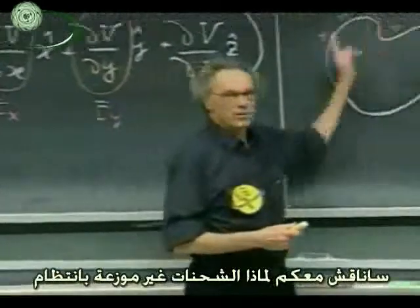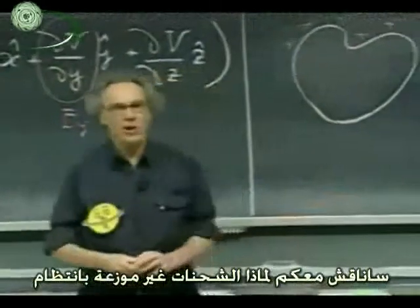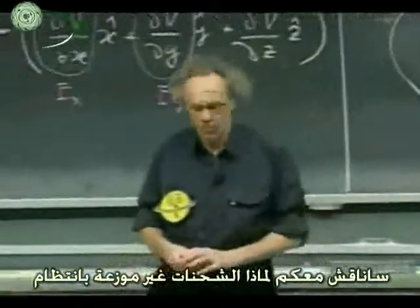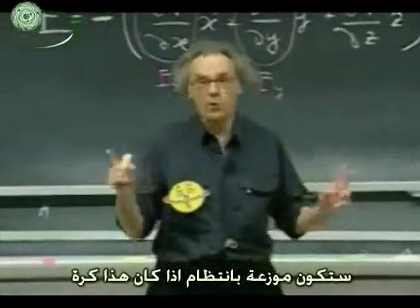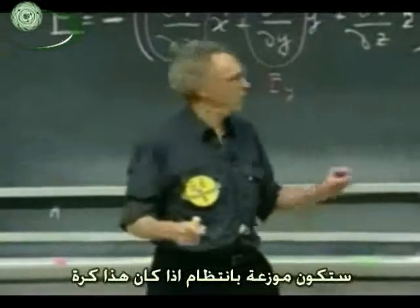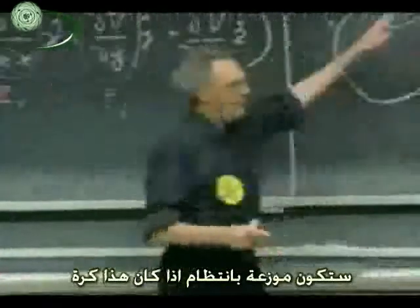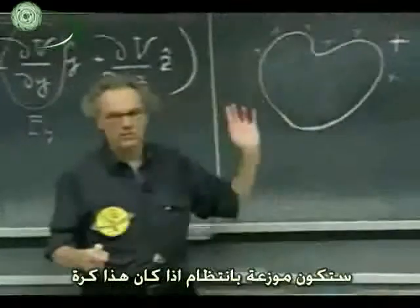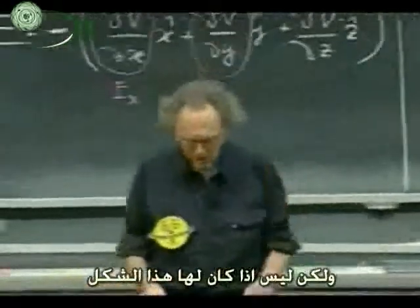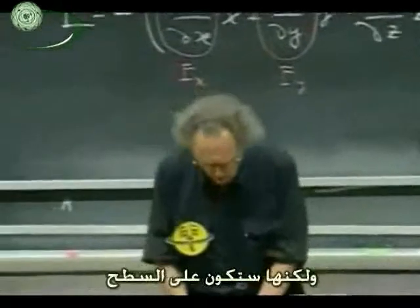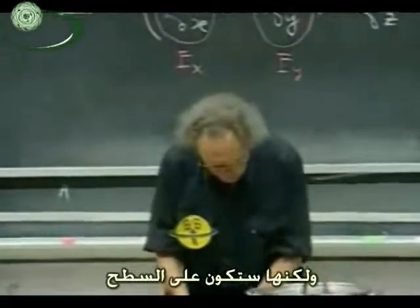The details why that charge is not uniformly distributed. It would not be distributed to the other side of the charge — it would be uniformly distributed at the surface if this were a sphere, but not if it has this funny shape. But it will be at the surface.